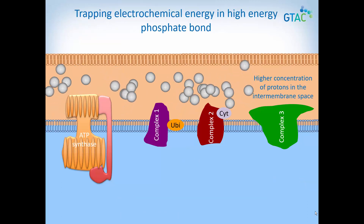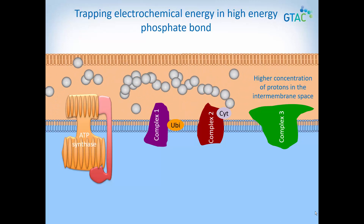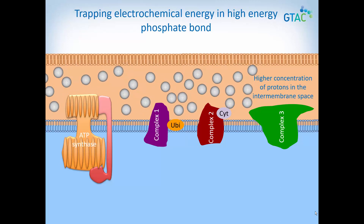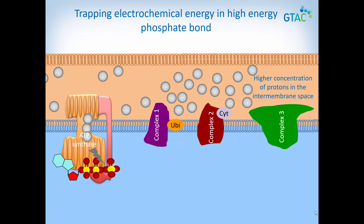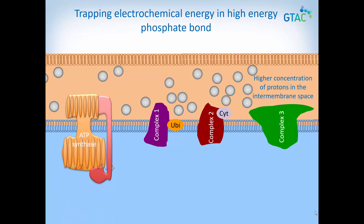Look at the buildup of protons in the intermembrane space — it's very crowded in there. The protons are looking for a way out, and there is only one way out: through ATP synthase. As three protons move through ATP synthase, they cause part of this protein to spin, a little like a rotor. This supplies enough energy to join an inorganic phosphate group to ADP. For every three protons moving through ATP synthase, we get one ATP molecule produced. Pause the video here so you can model this on your poster.